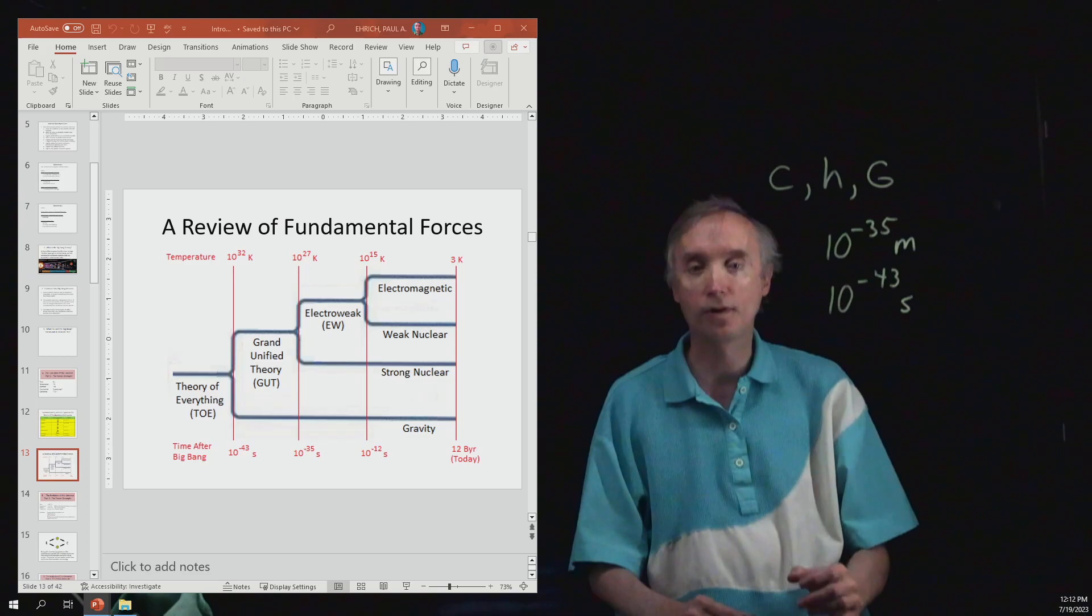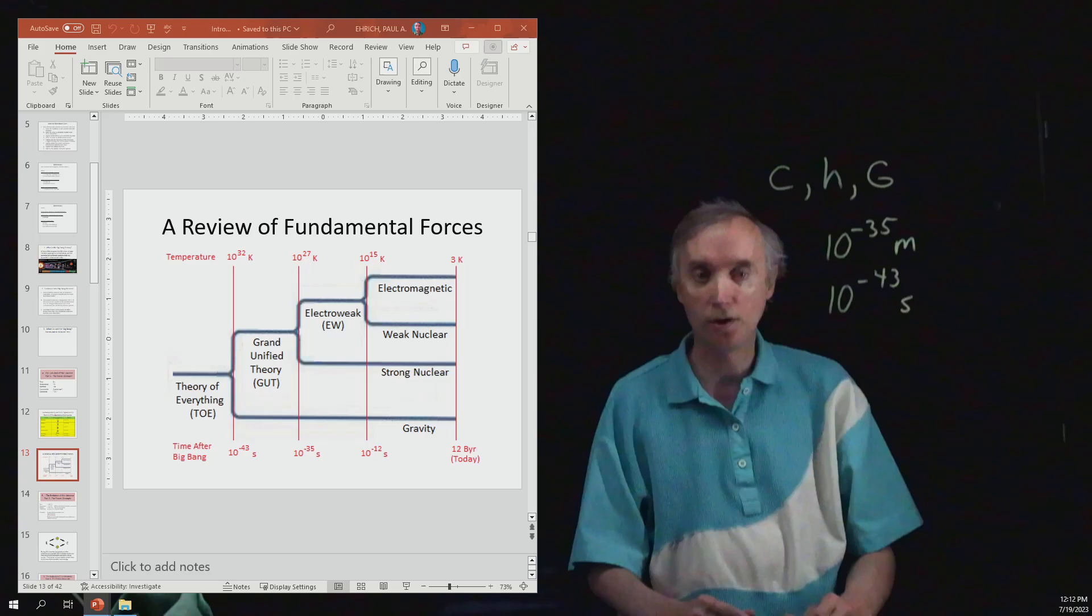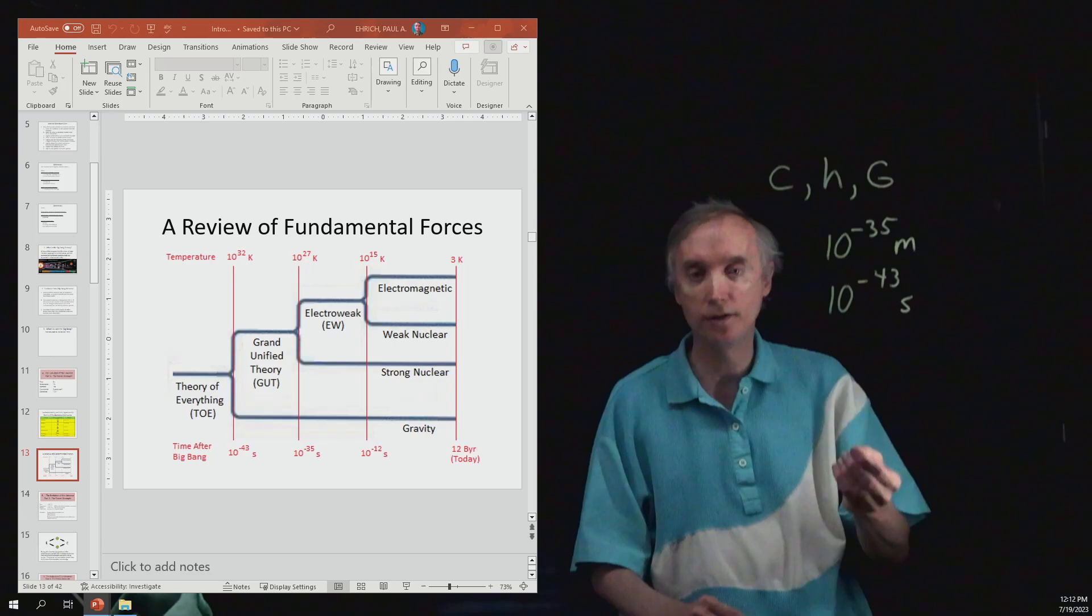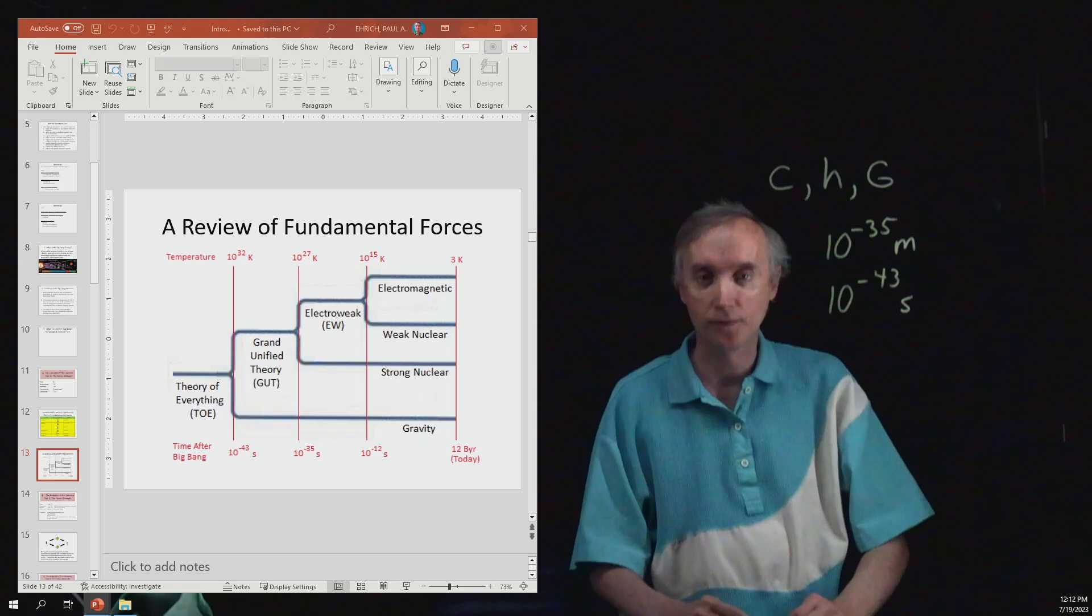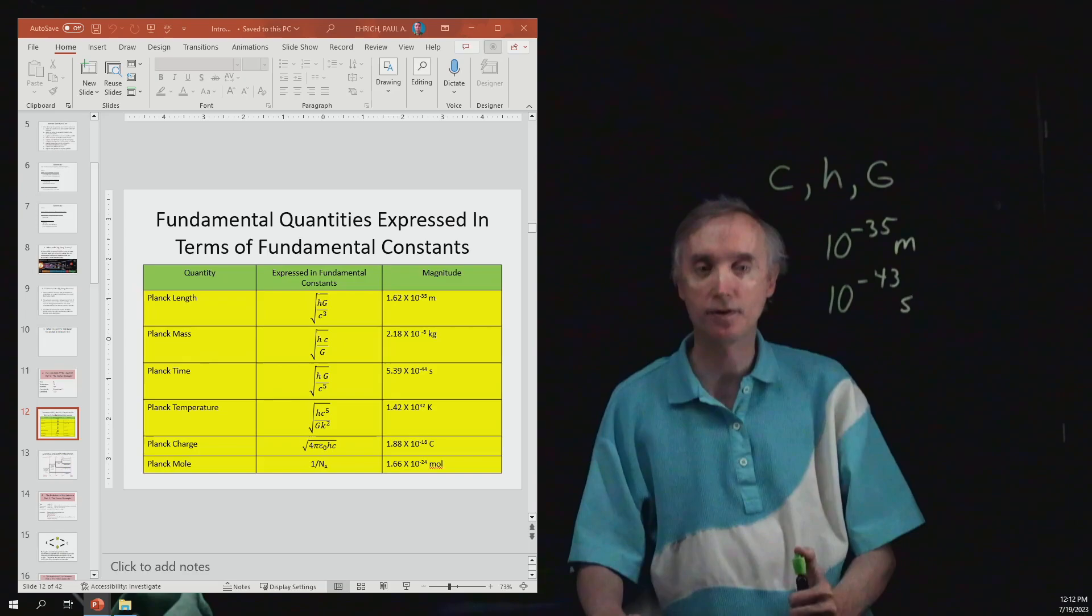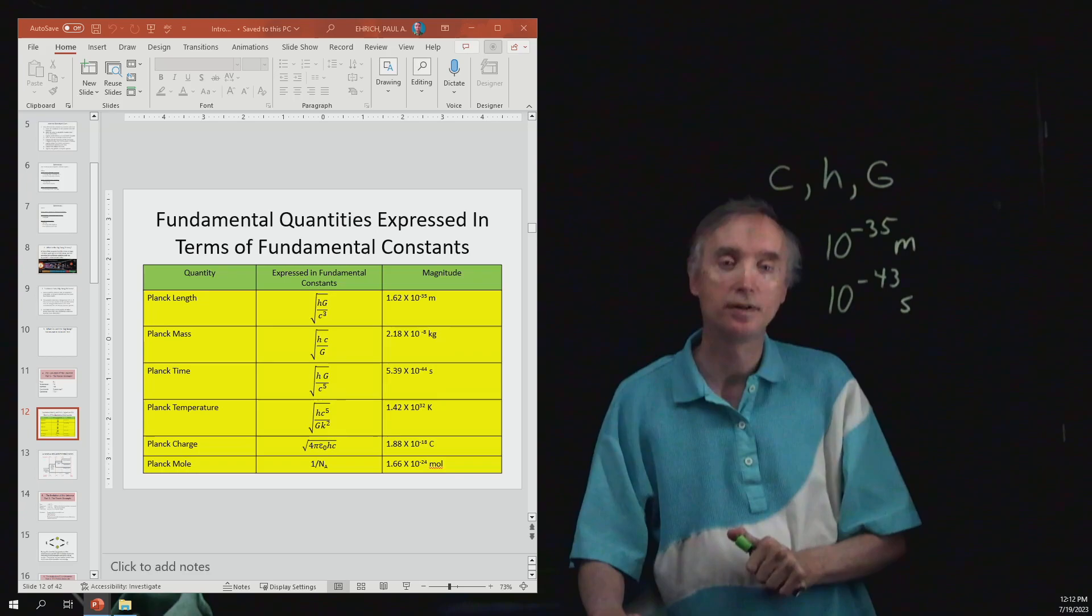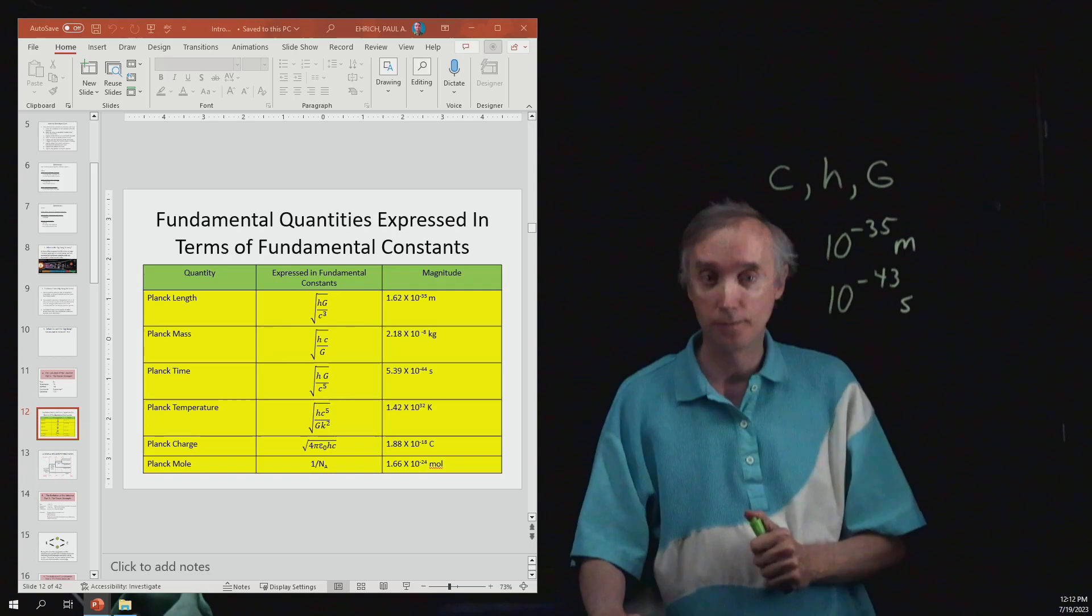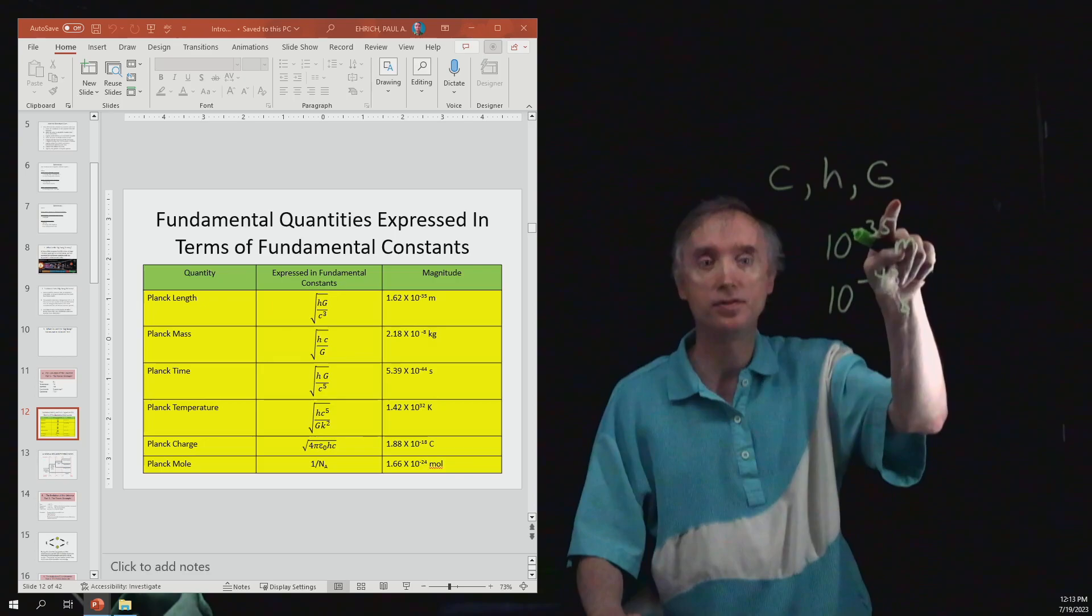Notice what was the temperature that they chose for the point at which the grand unified theory and gravity combine and turn into ToE. You notice that that temperature is the same as the temperature on this chart. These quantities represent how far back in time can we go and still use the laws of physics in order to explain how the universe works. Because the current laws of physics today have generated these fundamental constants.